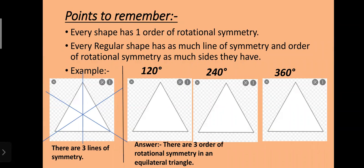Now here are some important points to remember — these also come in exams. First, every shape has at least one order of rotational symmetry, meaning every figure — whether it has equal sides or not — always has one order of rotational symmetry at 360 degrees. Second, every regular shape has as many lines of symmetry and orders of rotational symmetry as it has sides.